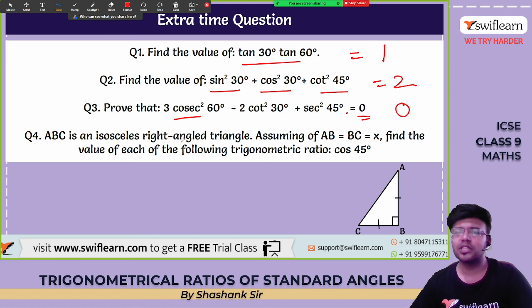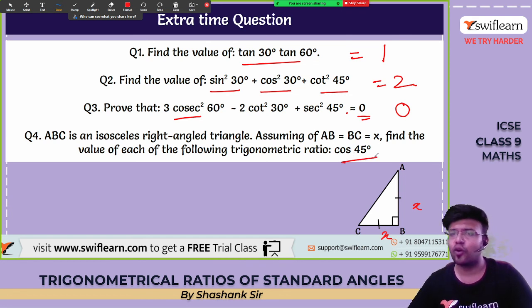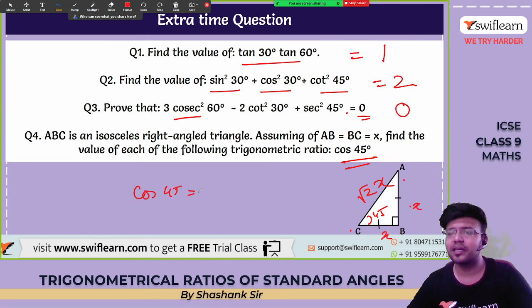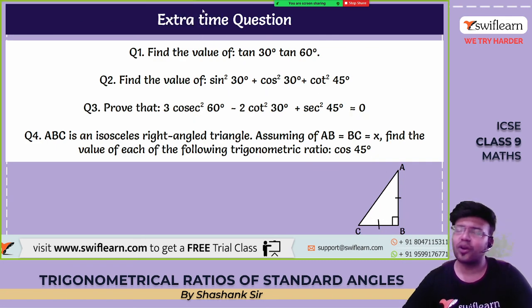Extra practice question 4: ABC is an isosceles right-angle triangle with AB = BC = x. Find cos 45°. Using the Pythagorean theorem, AC = √(x²+x²) = x√2. The angle at B is 45°. Cos 45° = BC/AC = x/(x√2). The x's cancel, giving cos 45° = 1/√2.